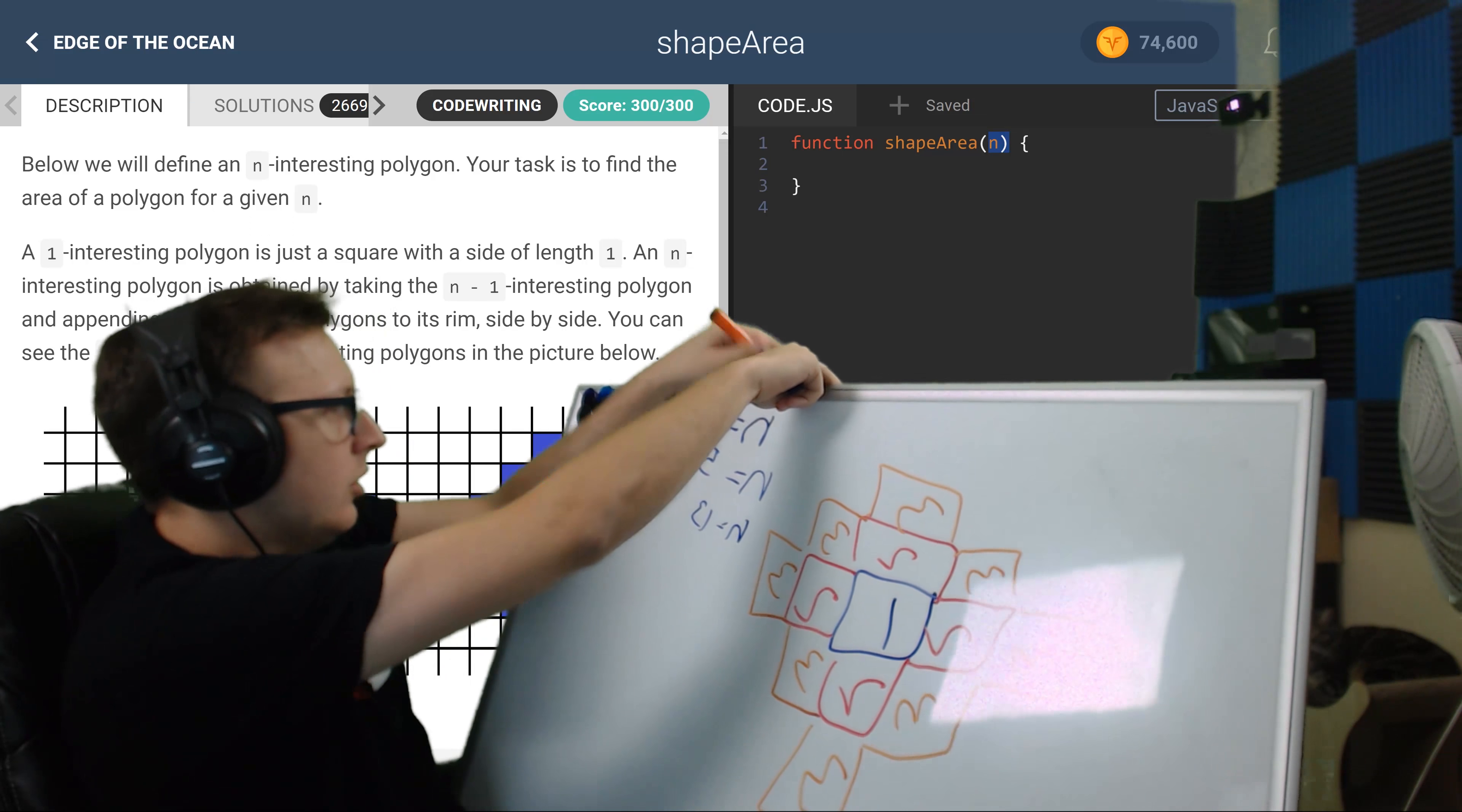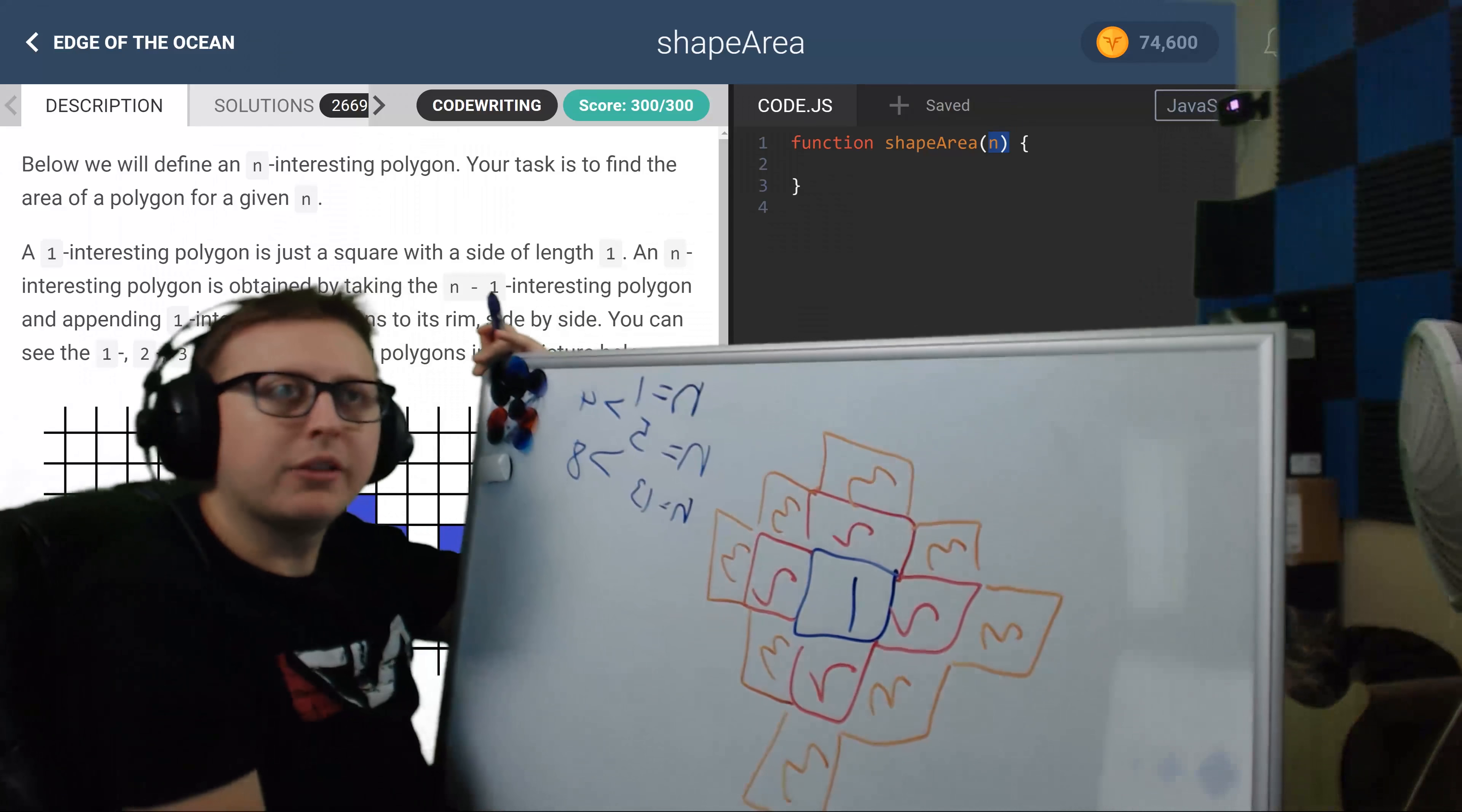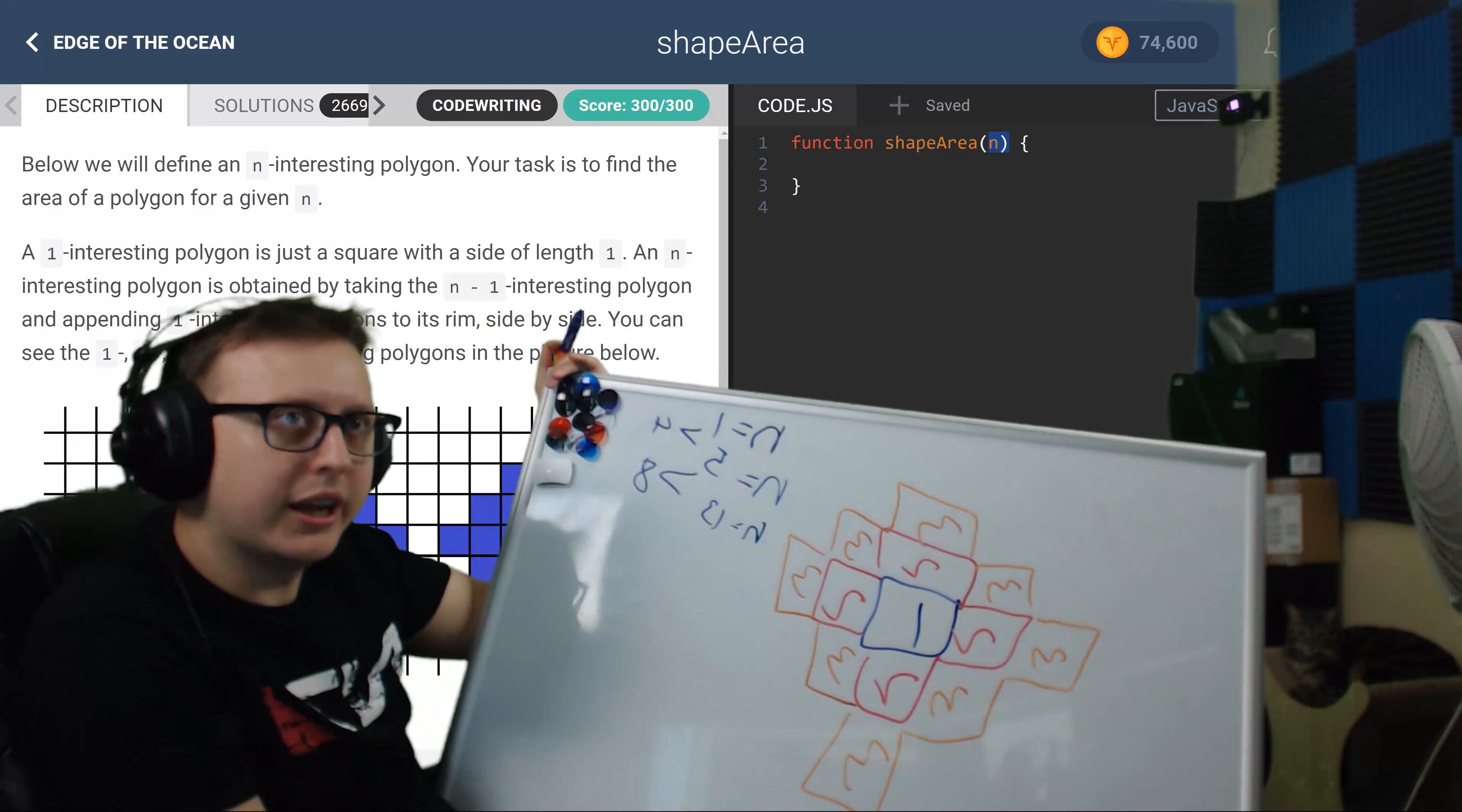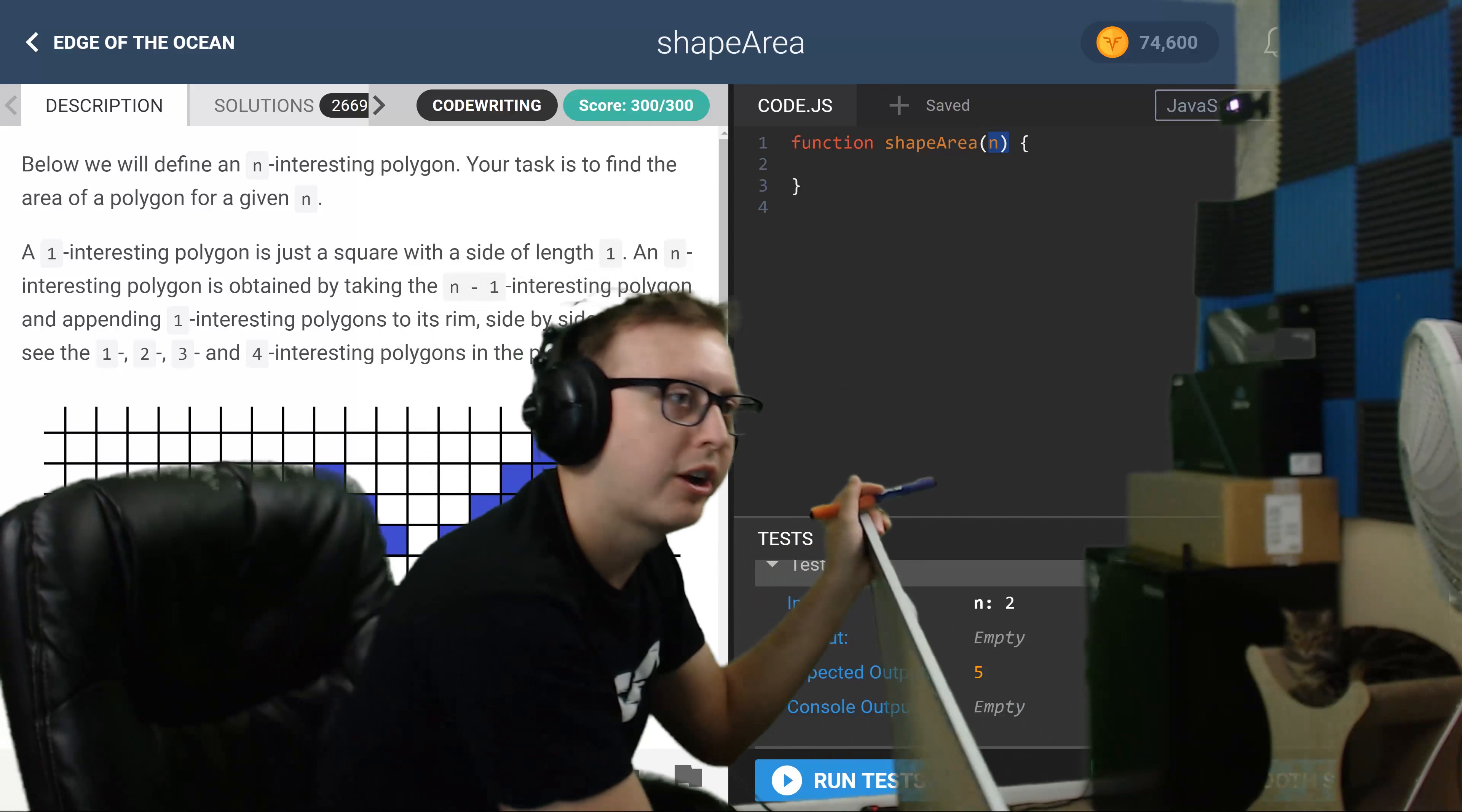So we have a difference of four here, we have a difference of eight here. So based off of that, we can kind of start jumping to conclusions that we're going to have a four and an eight in here. There's somehow a multiple of four, and now we just have to figure out in our code how we could write that.